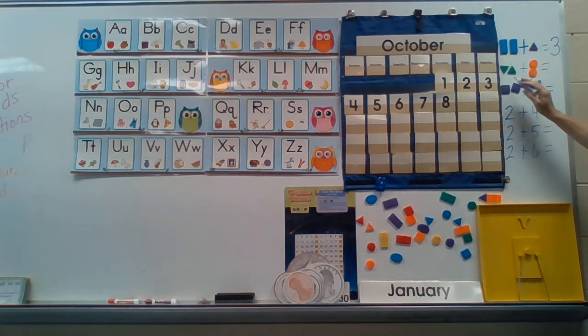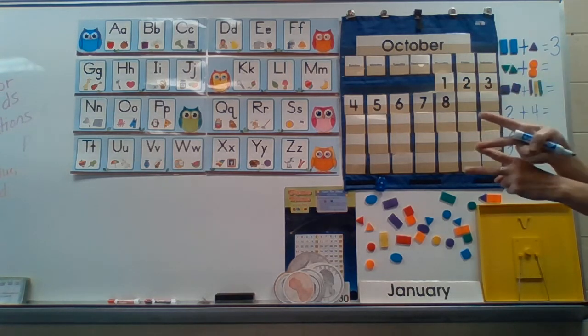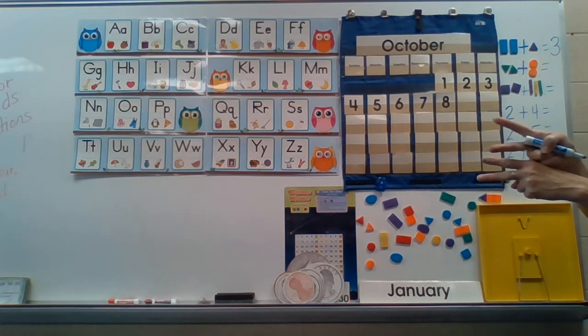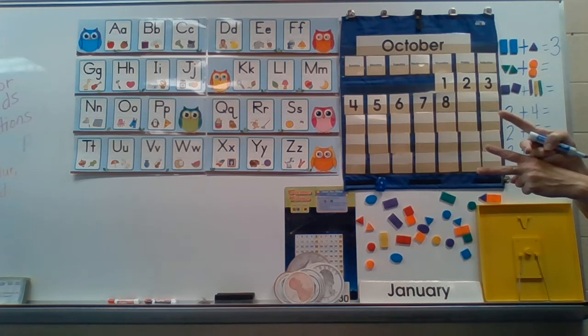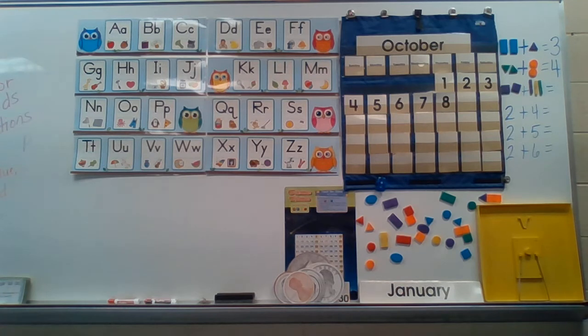My next number sentence or equation has two triangles plus, see that sign? Plus, means put them together. Plus two circles. Okay. If I have two triangles and two circles, how many will I have if I put them all together? One, two, three, four. Two plus two equals four. You probably already know that, don't you?